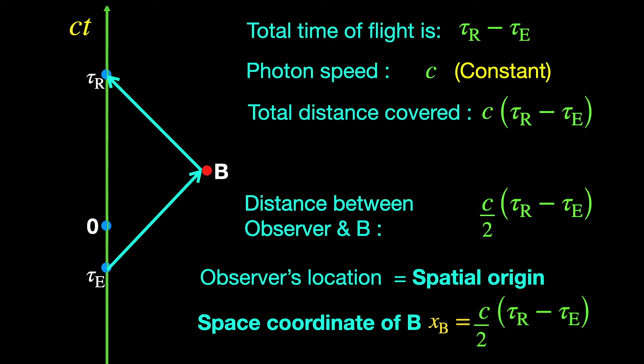Spatial distance between O and B is the space coordinate XB that we have already determined. Now, let's see what the temporal distance between O and B is that will work as the time coordinate of B.